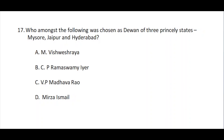Question number seventeen: Who among the following was chosen as Diwan of three princely states — Mysore, Jaipur, and Hyderabad? Option A: M. Visvesvaraya, option B: C.P. Ramaswami Iyer, option C: V.P. Madhava Rao, option D: Mirza Ismail. The correct answer is option B — C.P. Ramaswami Iyer.